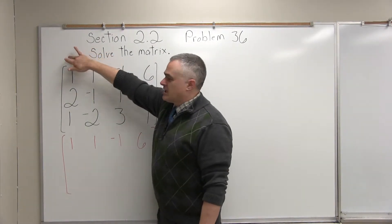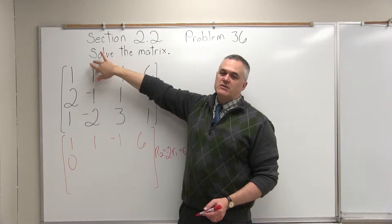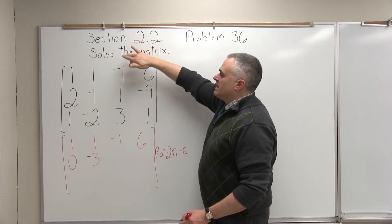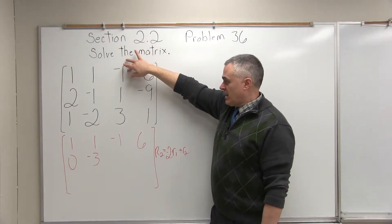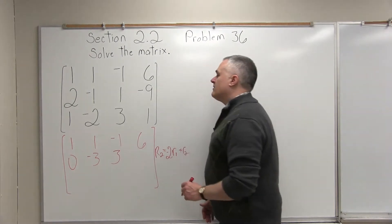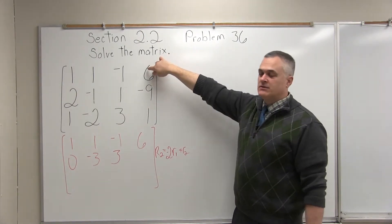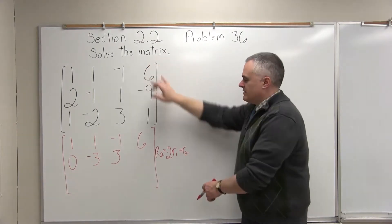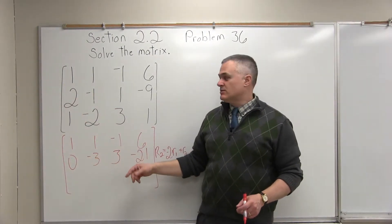Multiplying negative 2 times row 1: negative 2 times 1 is negative 2; add to row 2's negative 1 gives negative 3. Next position: negative 2 times negative 1 — the negatives cancel — gives positive 2; positive 2 plus positive 1 is 3. Last column: negative 2 times 6 is negative 12; negative 12 plus negative 9 is negative 21. So there's one of my zeros — I zeroed the 2, and it did change the rest of the row.